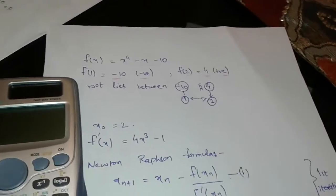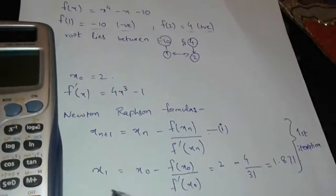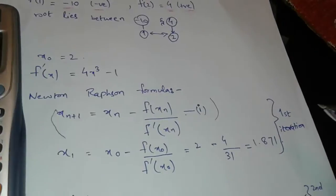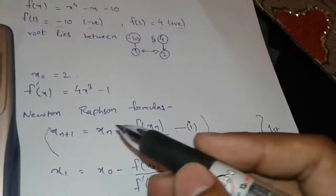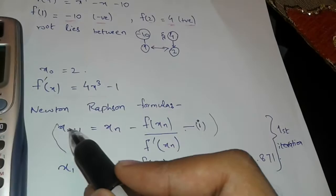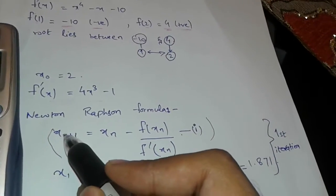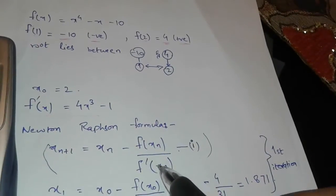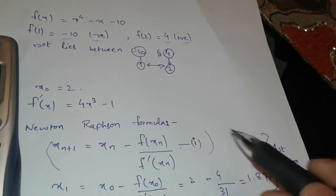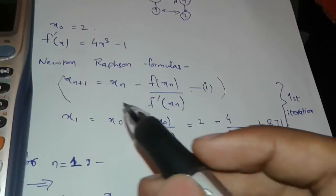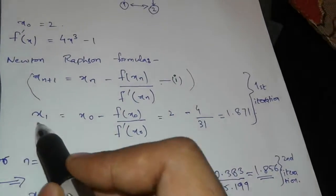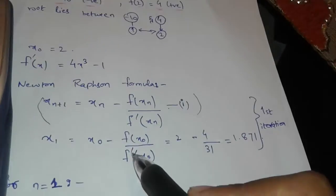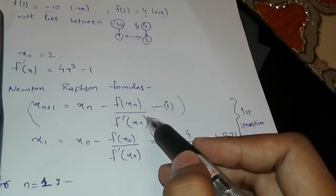Now I will differentiate f of x to form f dash of x, which I will use in the Newton-Raphson formula. The formula for Newton-Raphson is: x of n plus 1 equals x of n minus f of xn upon f dash of xn, which is the derivative. So for my first iteration I have x1 equals x0 minus f of x0 upon f dash of x0.